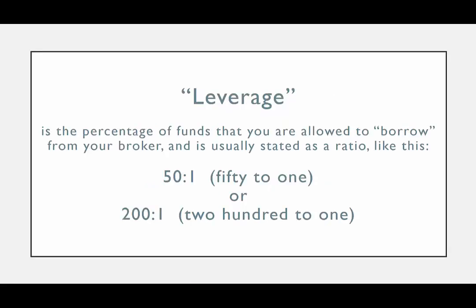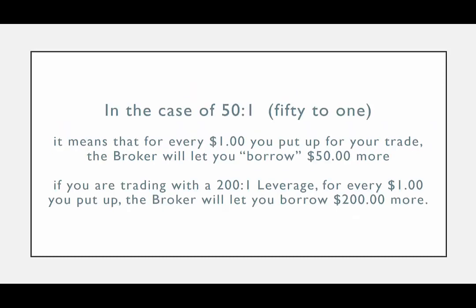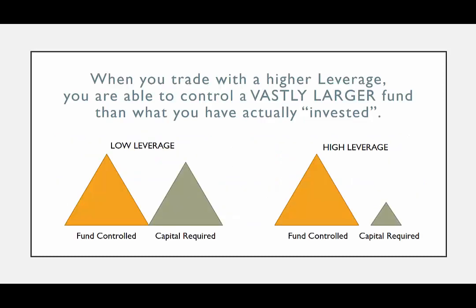Leverage essentially refers to the percentage of funds that you are allowed to borrow from your broker, and it is usually stated in a ratio like 50 to 1 or 200 to 1. In the case of 50 to 1, it means that for every $1 that you put up for your trade, the broker will allow you to borrow 50 more. Or, if your leverage is 200 to 1, then for every $1 you put up, the broker will allow you to borrow 200 more.